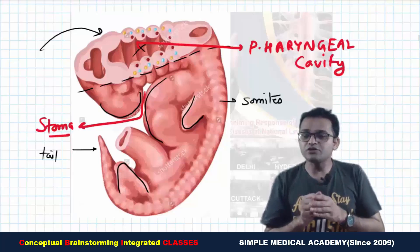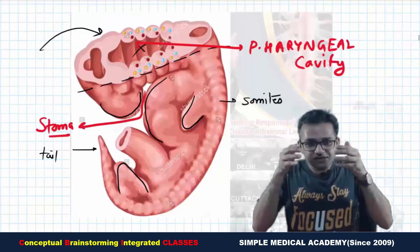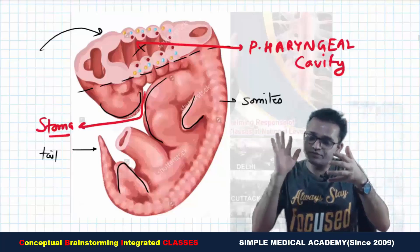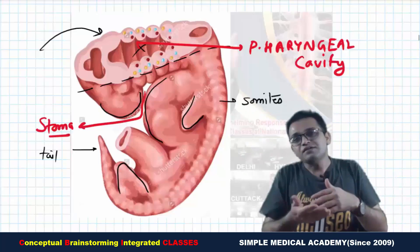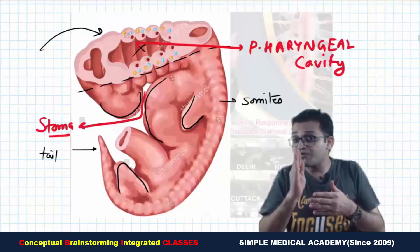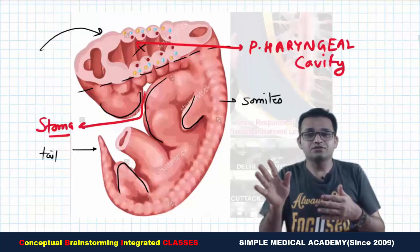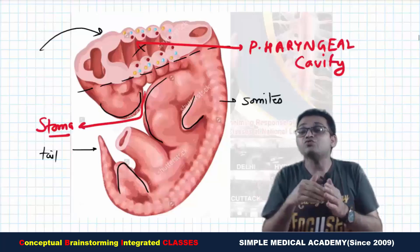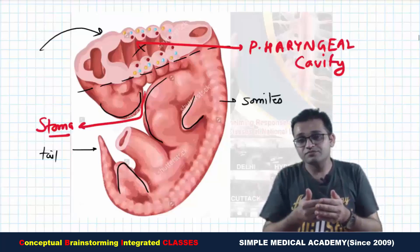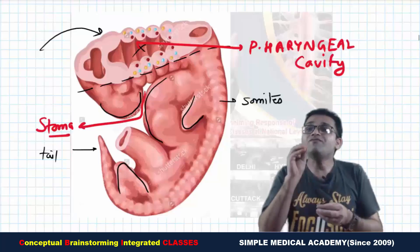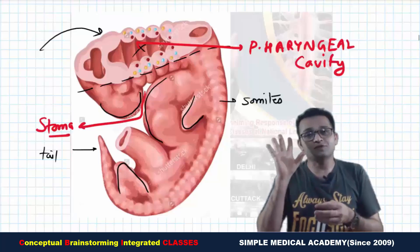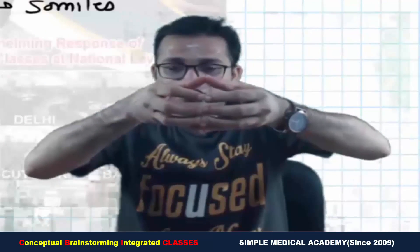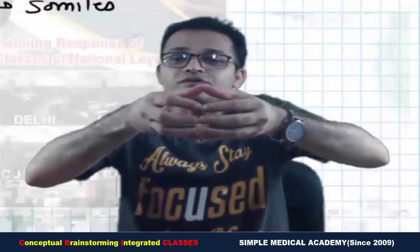The mesoderm forms six horizontal thickenings making arch-like structures known as pharyngeal arches. There are six thickenings and six arches — important MCQ point. However, the fifth pharyngeal arch totally disappears, which is another MCQ: which arch disappears? The fifth arch.